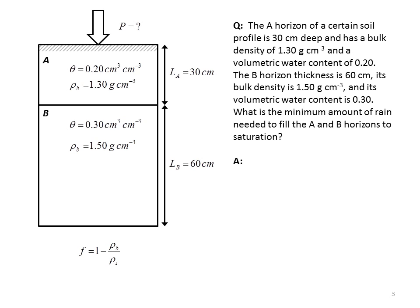Whereas the particle density, rho subscript S, is the mass of the solid particles per unit volume of solid particles. So the particle density, rho subscript S, is always going to be greater than the bulk density, rho subscript B.